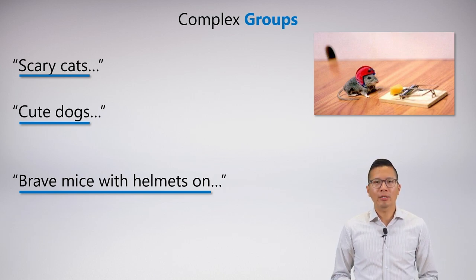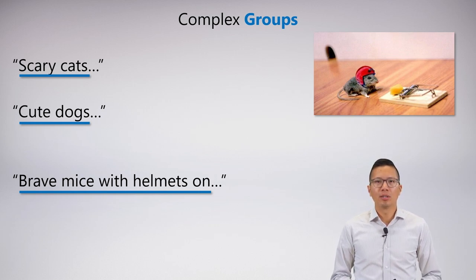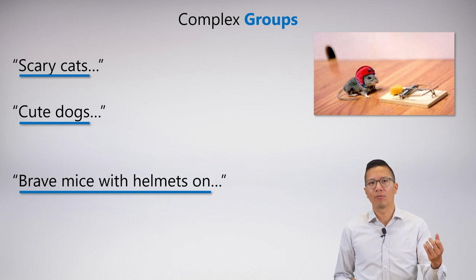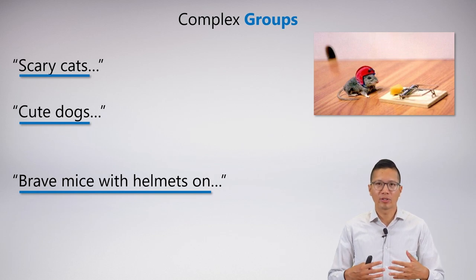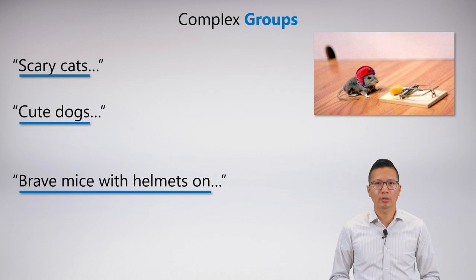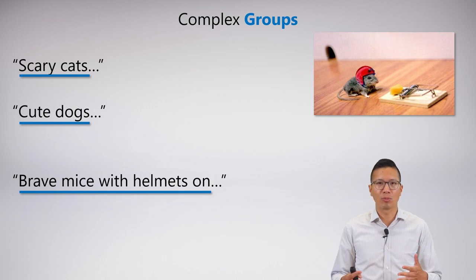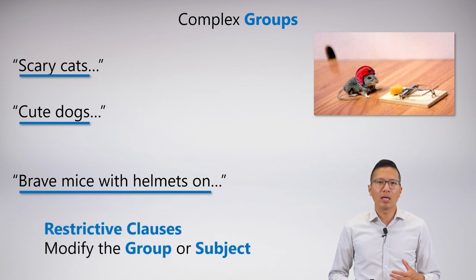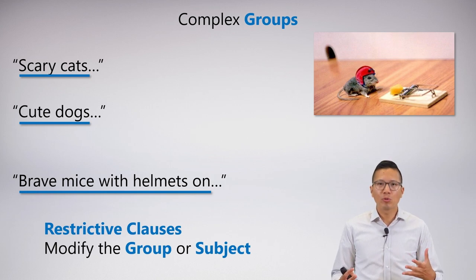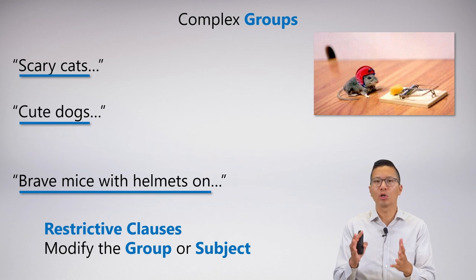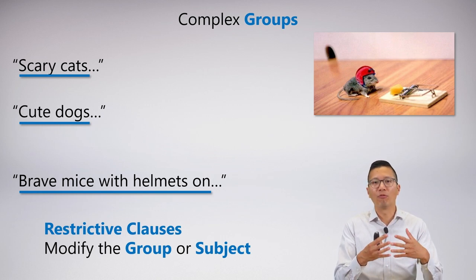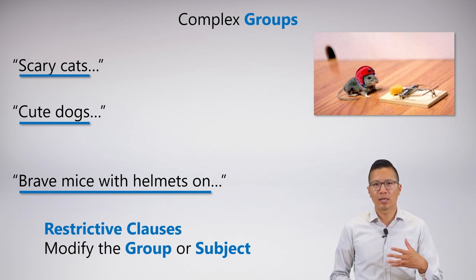What's a complex group? A complex group is essentially just a subject that has more than one predicate attached to it. So 'scary cats' has the predicate for scary and the predicate for cats — that combined makes a complex subject. 'Cute dogs' is a complex subject. 'Brave mice with helmets on' — same thing. It's just a way of stating the subject where the subject has to be captured in a variety of ways. For a complex group, this is often seen in a restrictive clause, and it modifies the group in the canonical form — these things go in the antecedent for a universal, or before the main conjunction for an existential.